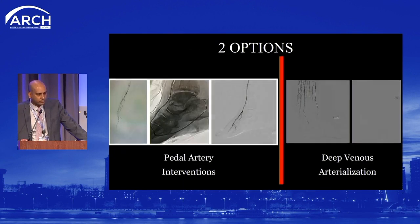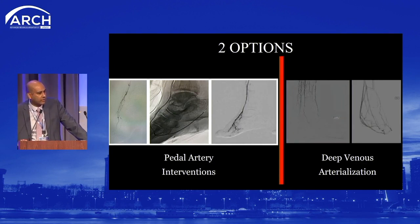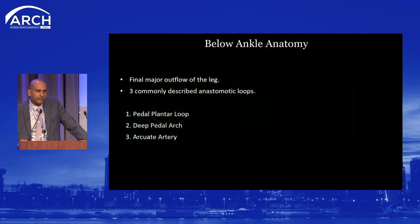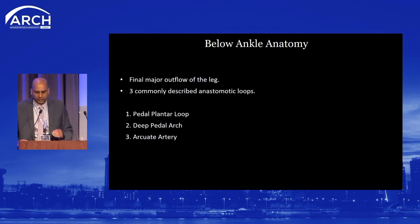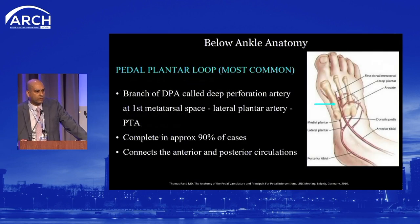So what are our options? We've got pedal artery interventions or pedal loop reconstruction, and we've got deep venous arterialization. To really understand pedal artery interventions, we have to discuss the below-ankle anatomy — it's not something everybody sees, but it's important and becoming more important. The vessels below the ankle are the final major outflow of the leg. There are three commonly described anastomotic loops: the pedal plantar loop, the deep pedal arch, and the arcuate artery.